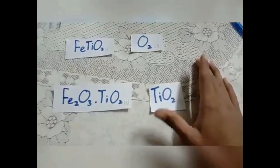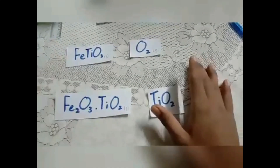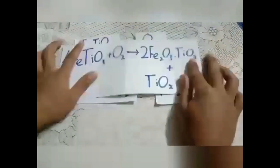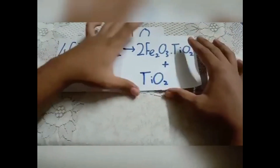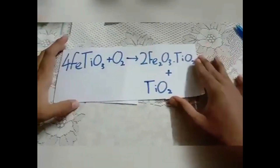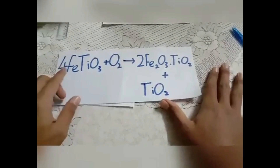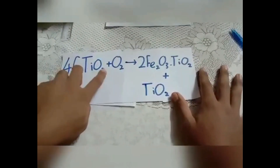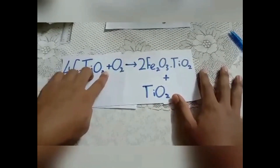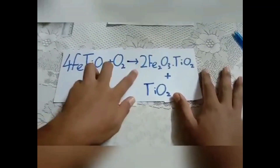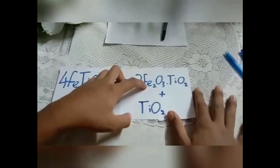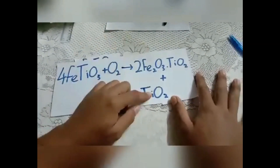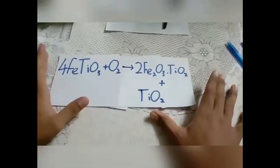The full equation for oxidation is: ilmenite reacts with oxygen to produce iron oxide (Fe2O3) and titanium dioxide (TiO2).